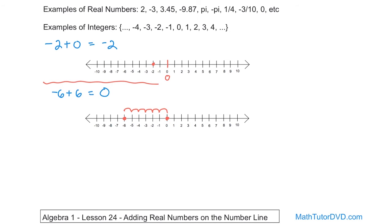You should start to recognize that when you have a negative number and you're adding the same number but positive, they annihilate each other and you always get 0. So negative 6 plus 6 is 0, negative 17 plus 17 is 0, negative 27 plus positive 27 is always 0. Visually on the number line, you always start at that negative number and move right the same number of units, so you always end up on 0.